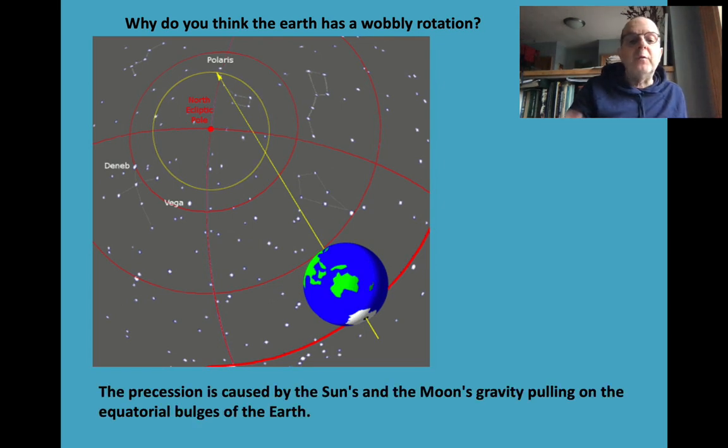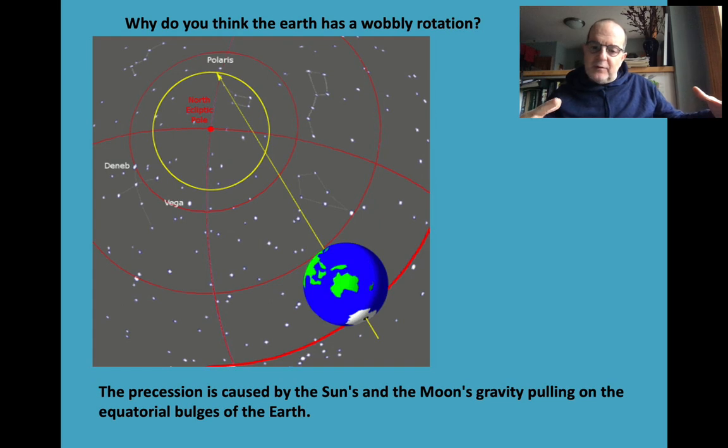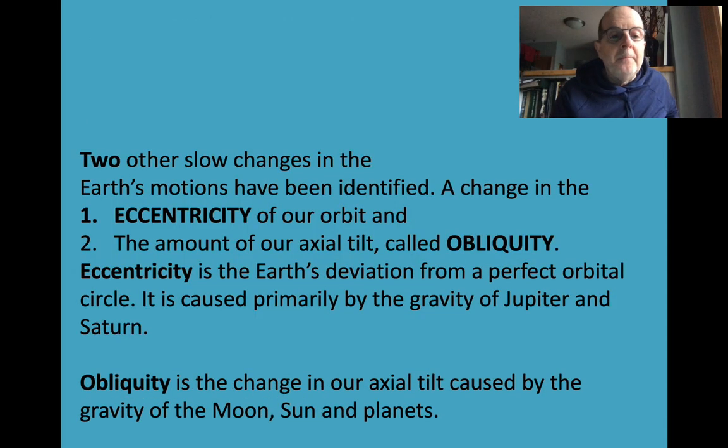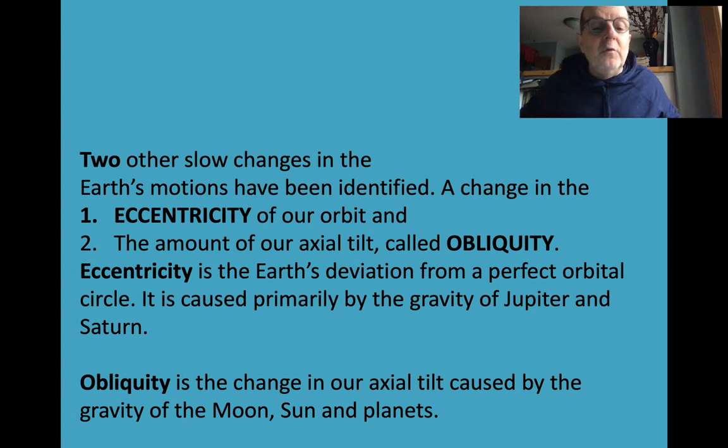Why does it have this wobble? Because we're an oblate spheroid. The sun and the moon act on our equatorial bulge slightly differently than the rest of the surface, and that creates a slight wobble to our rotation. We also have two other slow changes in the Earth's motion. One is our Earth's orbit's eccentricity, and the other is our axial tilt and obliquity. The eccentricity of the Earth's orbit varies from a perfect orbital circle because of the gravity of Jupiter and Saturn over time. And our axial tilt changes over time because of the gravity of the moon, sun, and planets. Not being alone in the solar system impacts all of our Earth motions.